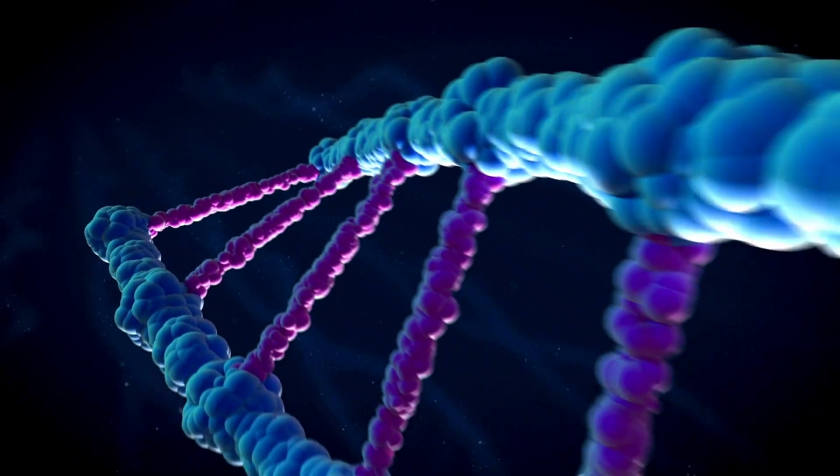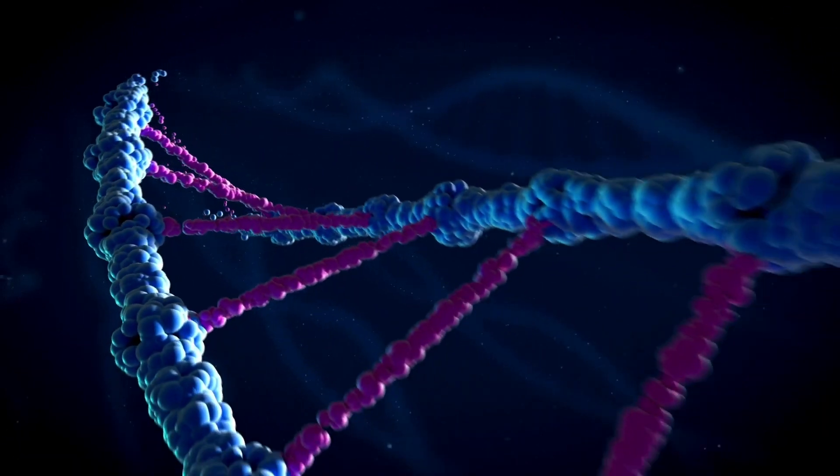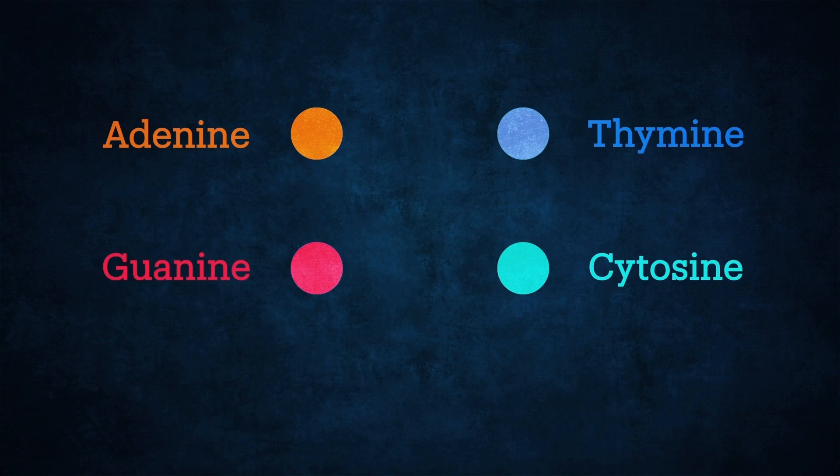DNA has a double helix structure and is made up of four different nitrogen-based molecules: adenine, thymine, guanine, and cytosine. These are collectively known as bases.